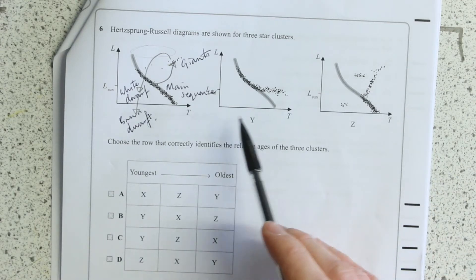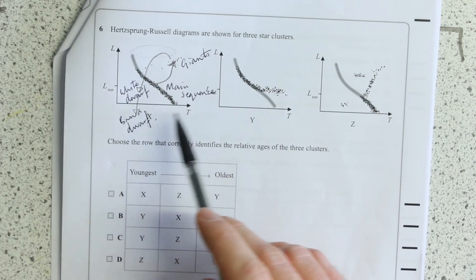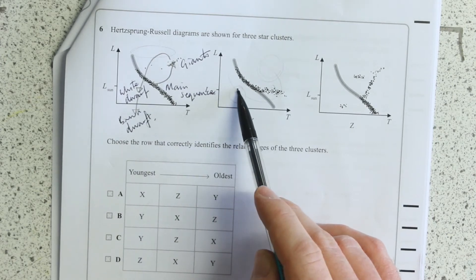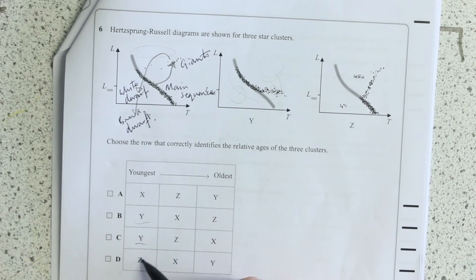So I would say what's done least of this transition is this middle one here. You haven't got any Giants, you haven't got any Dwarfs. So this is the youngest, so straightaway we're excluding the top two.